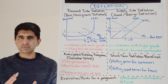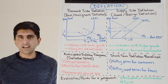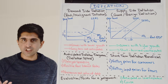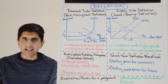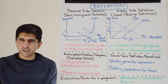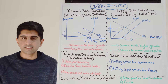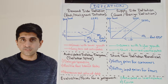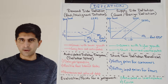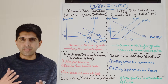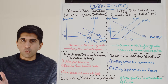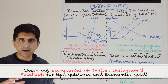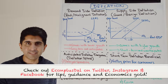That sounds like a great thing because if prices are falling, consumers can purchase goods and services cheaper and therefore boost their living standards — their income can go further and their purchasing power increases. For businesses it seems like good news too, because the prices of their inputs and raw materials become cheaper, and therefore they can widen their profit margins as their cost of production falls.